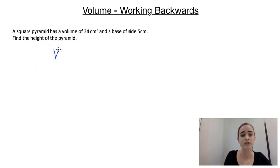Okay, so starting with the formula again, we know that for a pyramid the volume is 1/3 times the area of the base times the height. So the volume for us is 34. That's going to be equal to 1/3 times the area of the base. Because it's a square pyramid and the square has side length of 5 centimeters, that's going to be 5² times h.